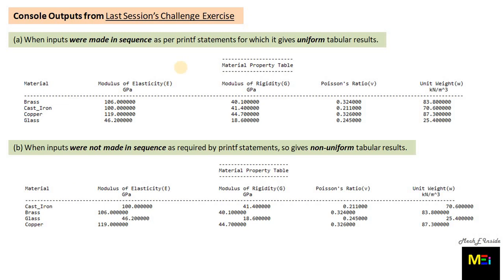First, when inputs were made in sequence as per printf statements, it gives uniform tabular results because you particularly designed those statements for every material with the help of escape sequences. But as soon as inputs were not made in sequence as per printf statements, it gives a non-uniform tabular output. So it is always desired to plan and use the appropriate format specification through which problems of irregular spacing and undesired floating point digits are fixed. In order to always get uniform tabular output with data inputted in any sequence, understanding format specifications is highly required.